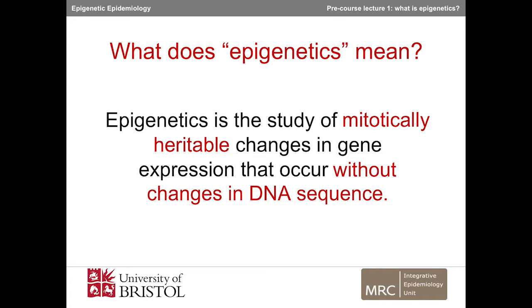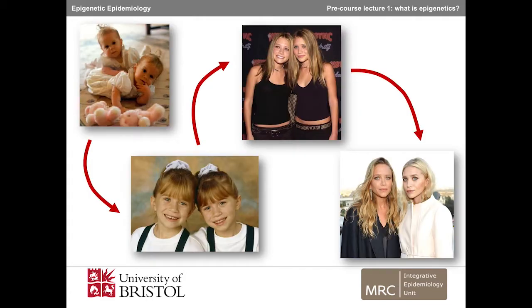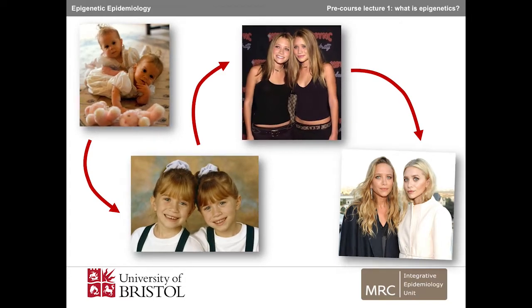The genetic architecture, or genome, remains basically the same throughout our lives, so monozygotic twins are genetically identical at birth, but also in adulthood. However, their epigenomes will become increasingly different over time.